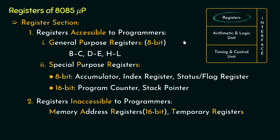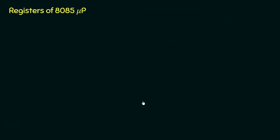Now focus on the broader classifications — specifically the names: registers accessible to programmers and registers inaccessible to the programmers. Why have we classified the register section this way? Is there a reason behind it? Well, there is. In order to understand it better, let me give you an analogy.